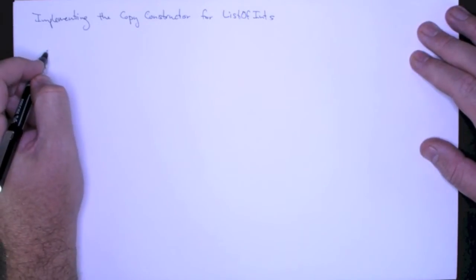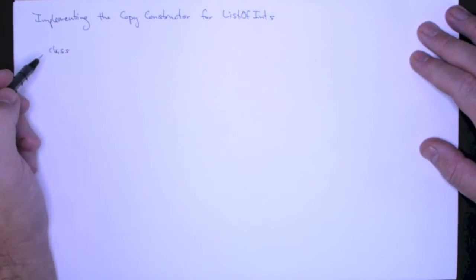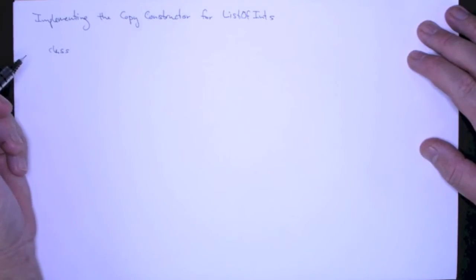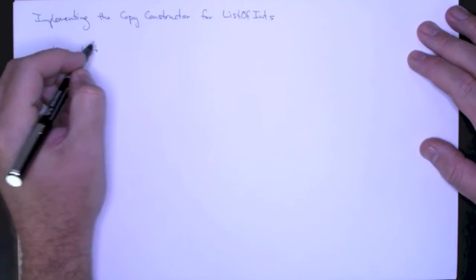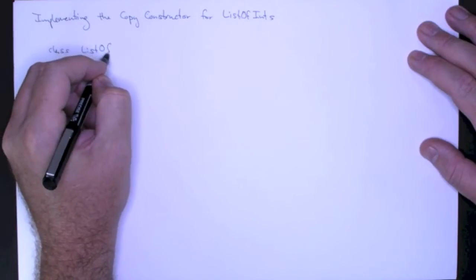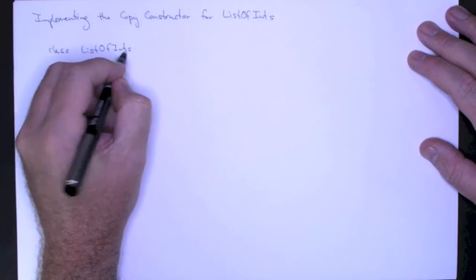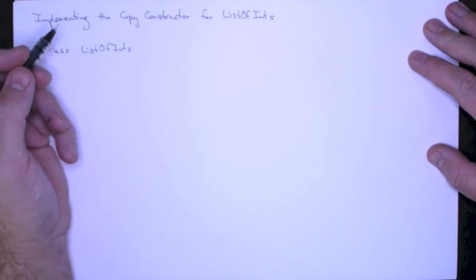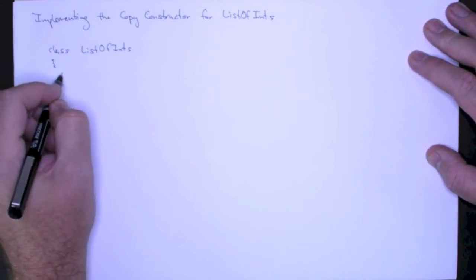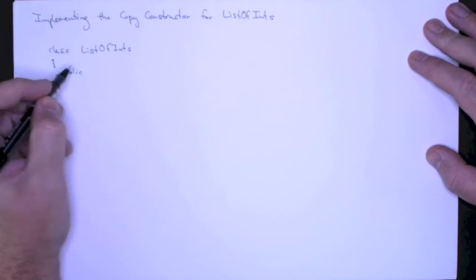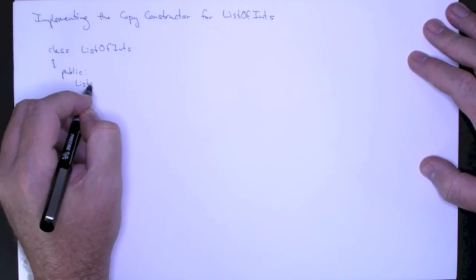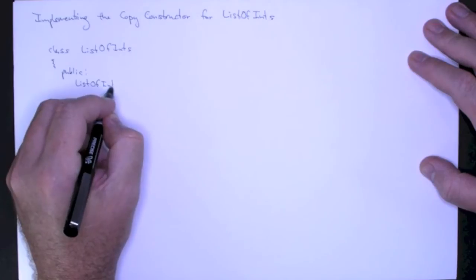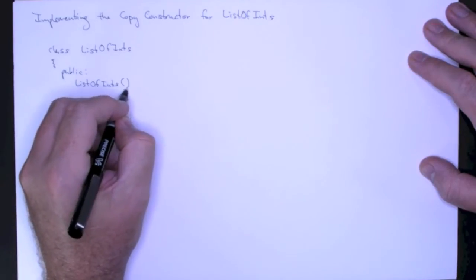So first of all, this is a simple implementation because we're just going to call operator equal that we just implemented. So in our list of ints, we have our default constructor. It looks like that.